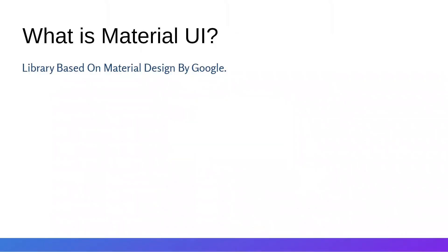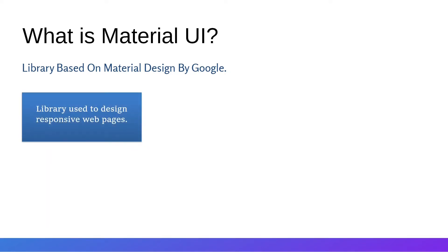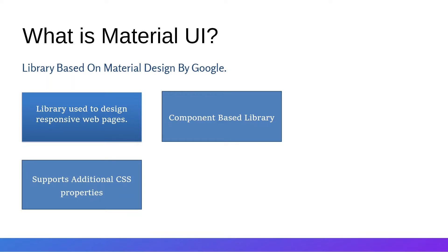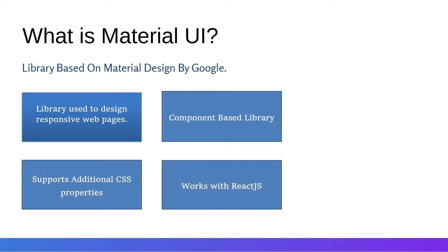Material UI is a library used to design responsive and modern web pages. It is a component-based library where you don't need to write CSS from scratch — the designs are already available and you just need to pass props to use them. It provides all standard CSS properties plus additional properties required for responsive designs, and it works with React.js. You just install it, import the components, and use them directly.